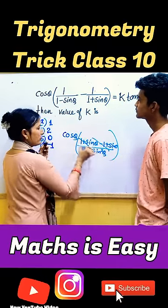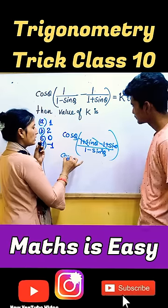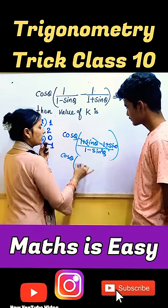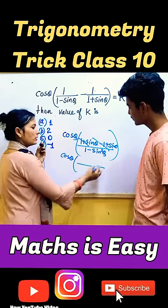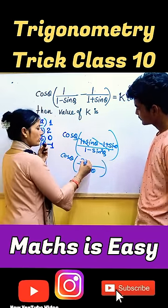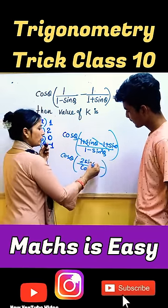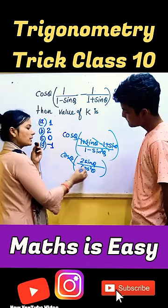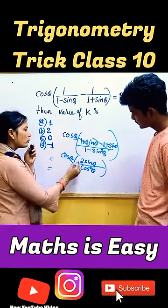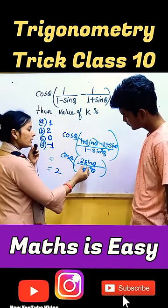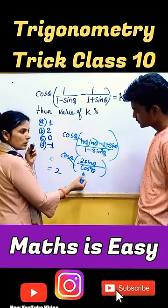Minus plus 1 cancel. Cos theta, 1 minus sin theta. 2 sin theta. 1 cos theta cancel. You have 2 sin theta upon cos theta.